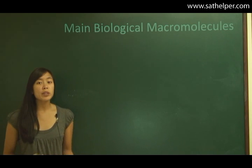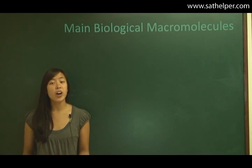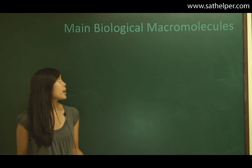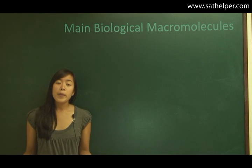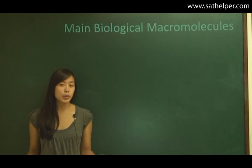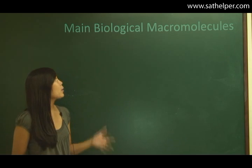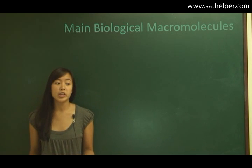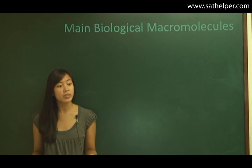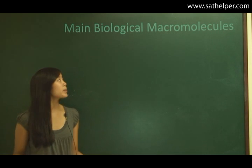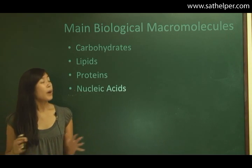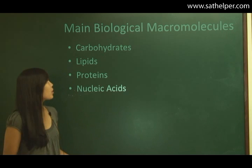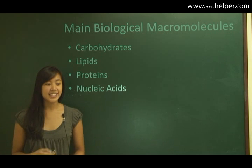If you remember last time, we talked about how carbon, hydrogen, oxygen, and nitrogen are found in most of the compounds in living things, and that compounds containing carbon are known as organic compounds. Right now we're going to be learning about the main four biological macromolecules, which all contain carbon. These four biological macromolecules are called carbohydrates, lipids, proteins, and nucleic acids.